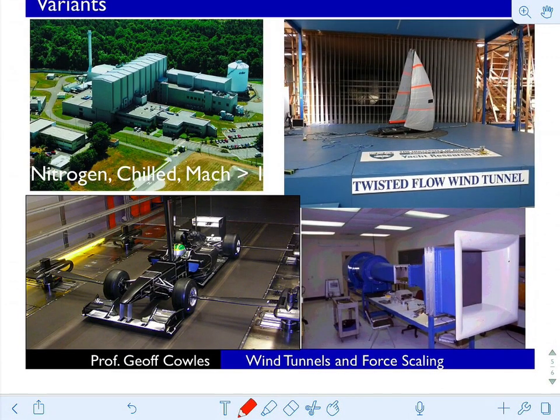There are a lot of different variants. Here are chilled tunnels, which are advantageous from a couple of points of view. If you reduce the speed of sound, you don't need the flow to be moving as quickly to reach a certain Mach number. Cooler fluids also have advantages in terms of viscosities. But once it's chilled, you have to keep the whole tunnel down — it's difficult to get in and out of the test section, things have to be insulated, and there's added expense.